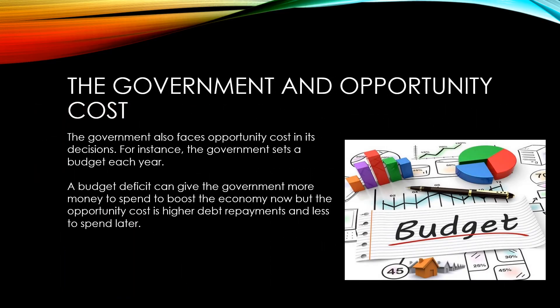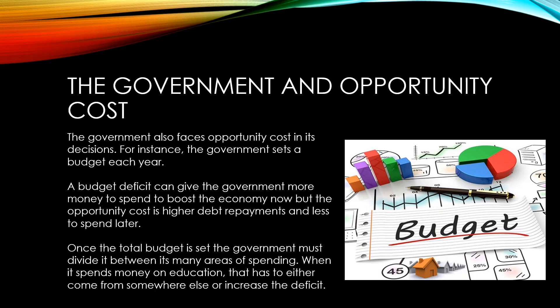The government also faces opportunity costs with all of its decisions. Each year the government sets a budget. They could be tempted to set a budget deficit every year to give them more money to spend and boost the economy. However, there is an opportunity cost to this of higher debt repayments and less to spend in later years. Once the total budget is established, if the government chooses to spend more in one area, say education, then that money has to come from another area of spending or else increase the deficit.